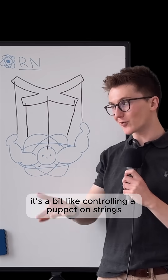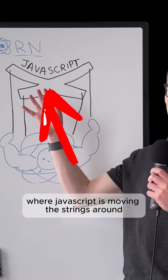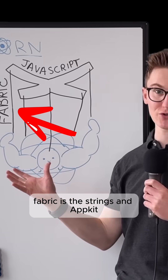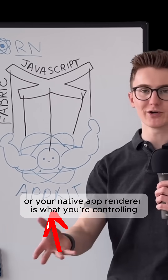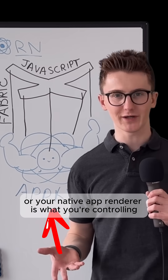It's a bit like controlling a puppet on strings, where JavaScript is moving the strings around, Fabric is the strings, and AppKit or your native app renderer is what you're controlling.